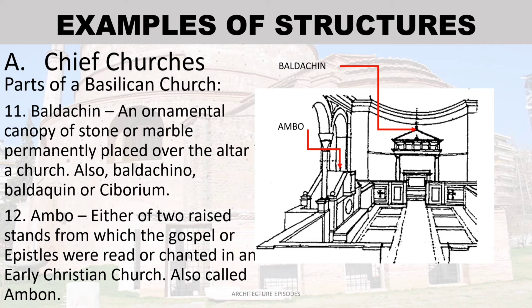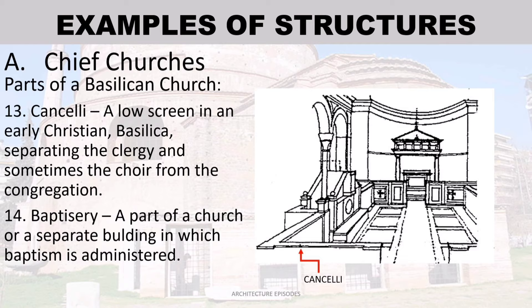Baldachin — an ornamental canopy of stone or marble permanently placed over the altar of a church; also known as baldachino, baldachin, or ciborium. Ambo — either of two raised stands from which the gospel or epistles were read or chanted in an early Christian church; also called ambon. Cancelli — a low screen in an early Christian basilica separating the clergy and sometimes the choir from the congregation. Baptistry — a part of a church or a separate building in which baptism is administered.